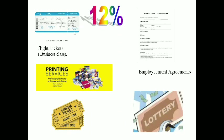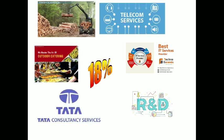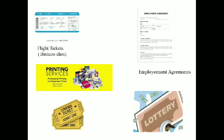The 12% services category includes business-class flight tickets, professional printing services such as books and magazines, cinema tickets, employment agreements and other contracts. State lotteries run by states — 13 states participate in state lotteries, though Karnataka is not among them — are also taxable at 12%.